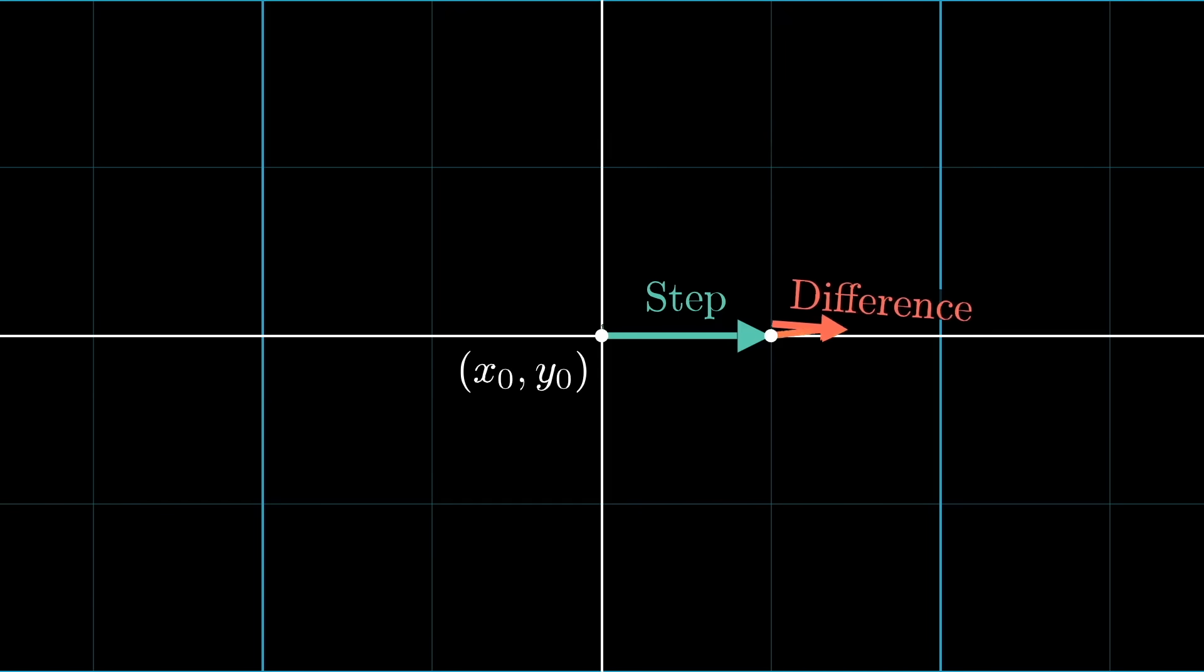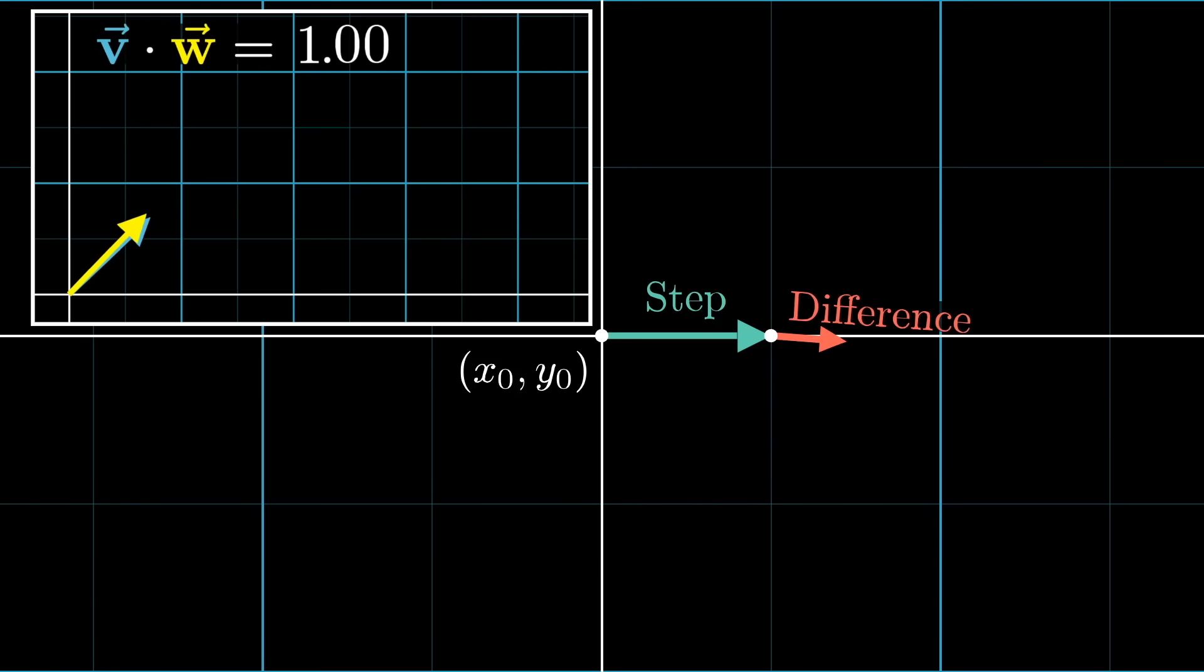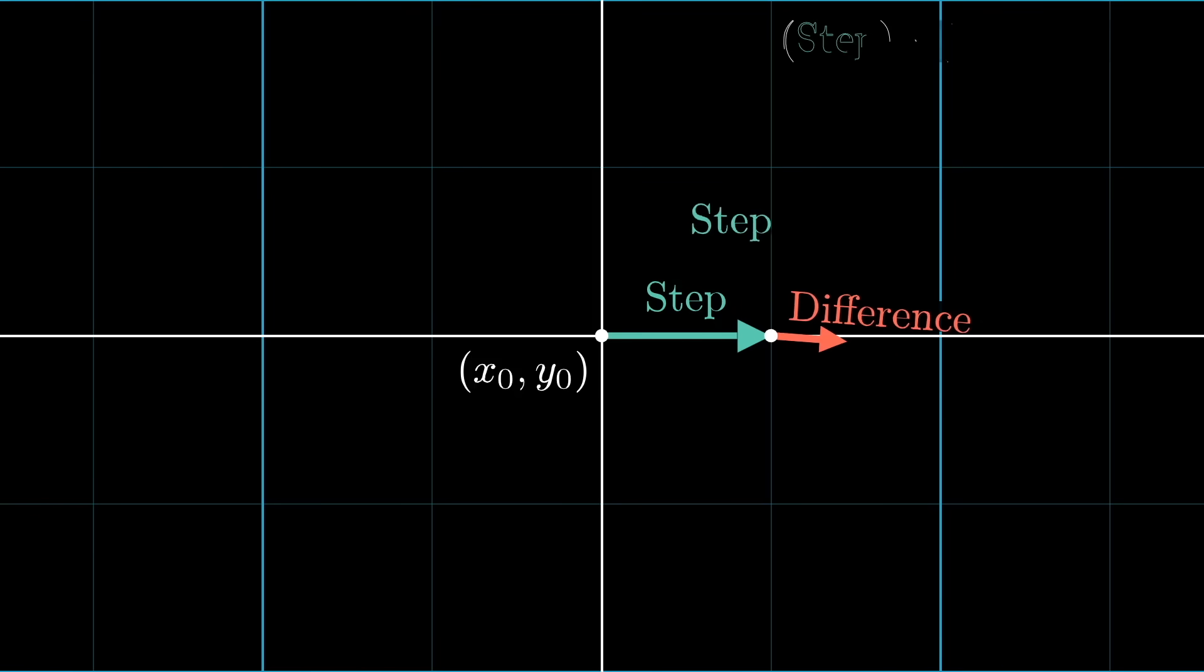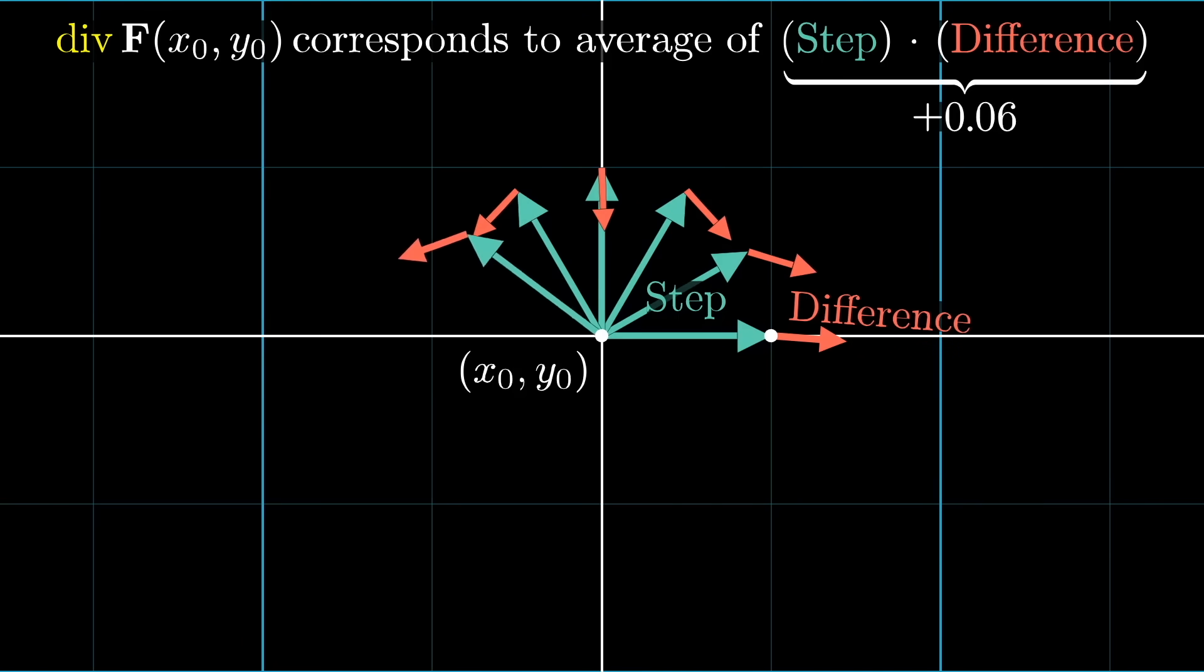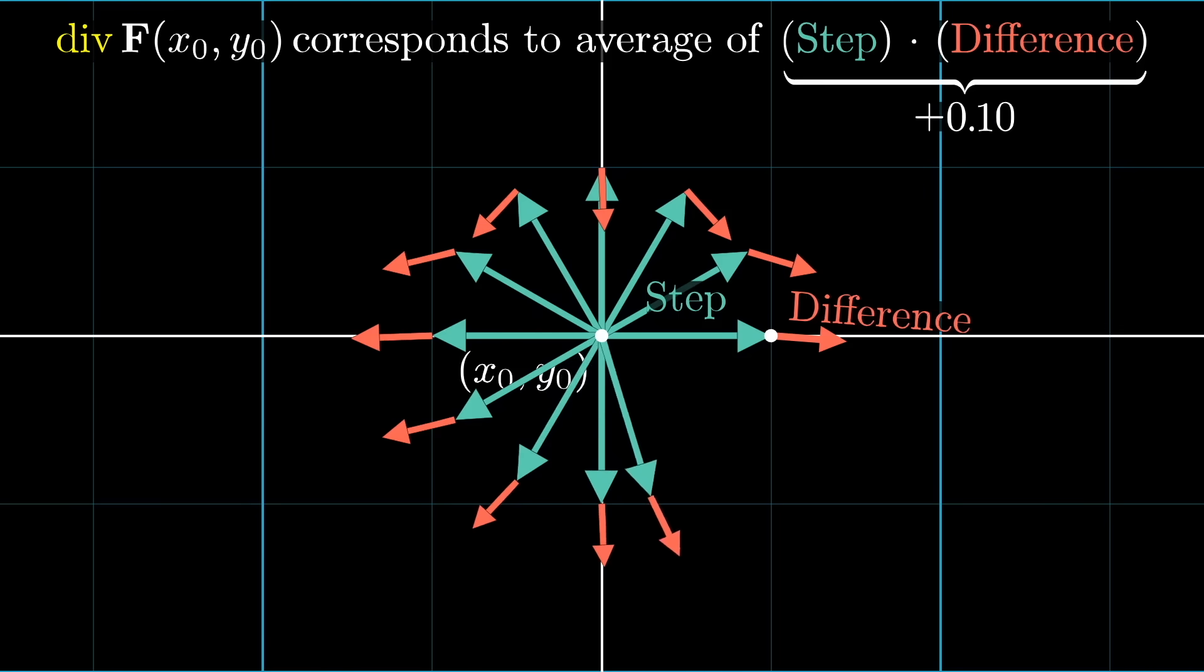The dot product gives you a measure of how aligned two vectors are, right? The dot product of your step vector with that difference vector it causes tends to be positive in regions where the divergence is positive, and vice versa. In fact, in some sense, the divergence is an average value for this dot product of a step with a change to the output that it causes over all possible step directions, assuming that things are rescaled appropriately.